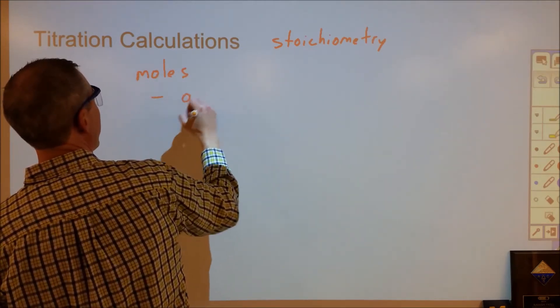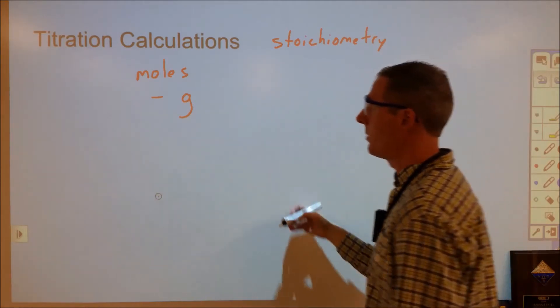Number one: you have grams of a chemical. You can convert that into moles by dividing by the molar mass.